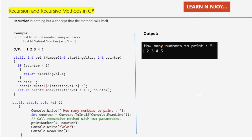In main, I write to the console asking how many numbers to print, to get input from the user. I capture that number using `Console.ReadLine()`, convert it to int, and store it in a variable called `counter`. Then I call the recursive method with two parameters: the first parameter is the starting value as 1, and the second is the counter value received from the console — the number entered by the user.